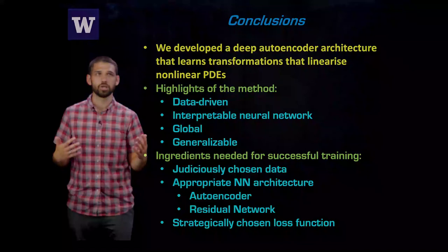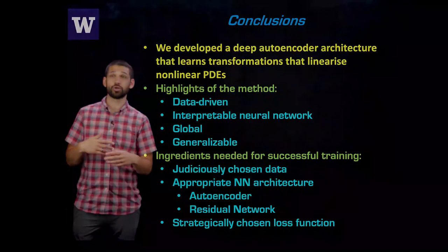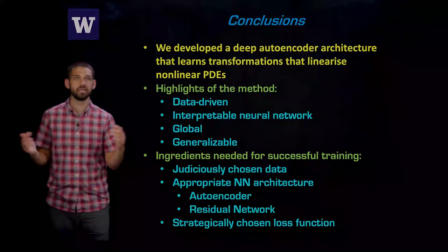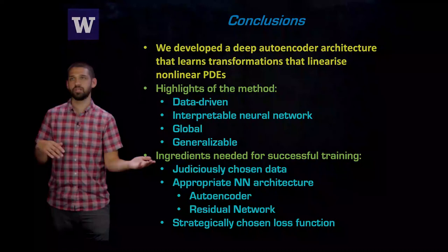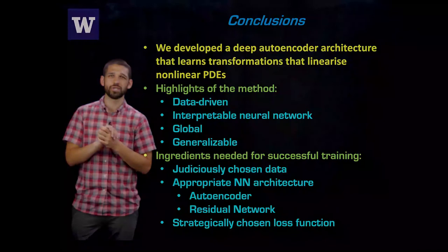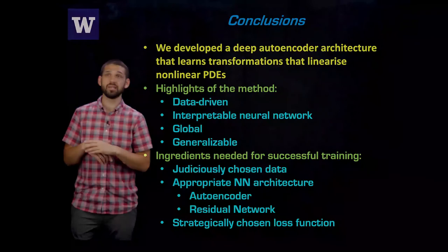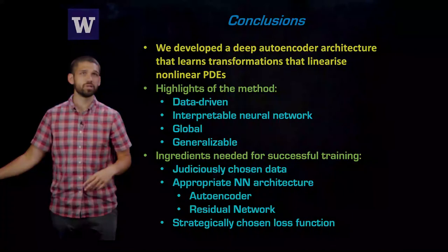So what we did is we developed this deep autoencoder architecture that can learn transformations to linearize PDEs. Highlights of the method: it's completely data-driven. We have an interpretable neural network. Our transformations are global, so they work for different initial conditions, but also generalizable to different types of PDEs. We did have to have just the right ingredients in our training procedure to get good results. The things that were important: we needed to have judiciously chosen data with a variety of initial conditions to be able to generalize to other types of initial conditions. We also needed the right neural network architecture. So we took advantage of autoencoders to get invertible transformations and also a residual neural network architecture with those skip connections. And last, we needed the right loss functions to get the properties that we wanted in our network. So there are plenty more details, and I would refer you to our paper for those. And I thank you for listening.